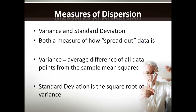Measures of dispersion are essentially a measure of how spread out data is. We describe the spread of data in two ways: using variance and standard deviation. Mathematically, variance is the average difference of all the data points from the sample mean, squared. Standard deviation is the square root of the variance. The take-home message is that both standard deviation and variance describe how spread out data is, and the greater the standard deviation, the more spread out the data set.